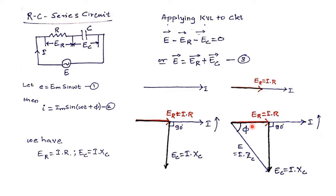With all vectors rotating in the anticlockwise direction, observe: current I is on the reference axis, whereas voltage E is falling behind current I by an angle φ. It means that voltage is lagging behind current by angle φ, or equivalently current is leading voltage by angle φ. So equation 2 gets justified — that current I will be leading voltage E by angle φ degrees.